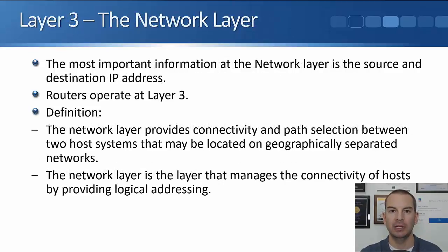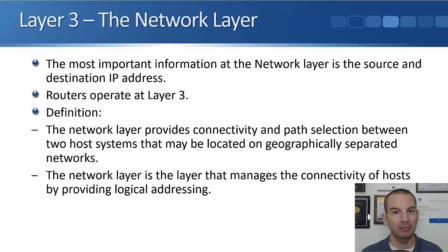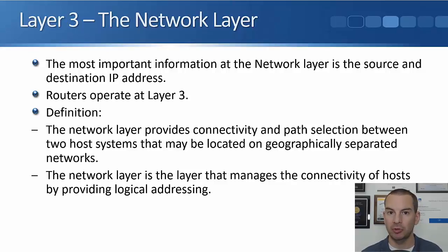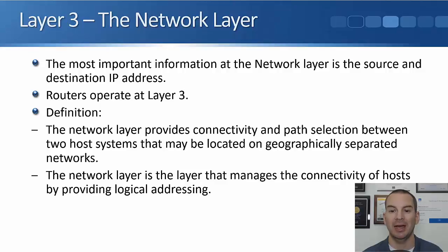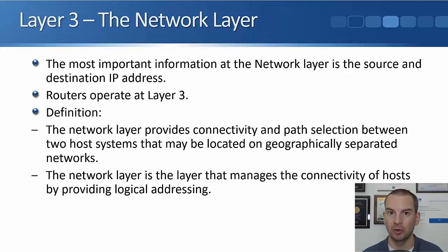The next layer is layer three, the network layer. The most important information at the network layer is the source and destination IP address. Again, there's a lot of other information also carried in the layer three header, but we'll talk about that when we get to the layer section. Routers are layer three devices — they operate at layer three of the OSI model. The definition of the network layer: it provides connectivity and path selection between two host systems that may be located on geographically separated networks. The network layer manages the connectivity of hosts by providing logical addressing. IP addressing is our logical addressing.